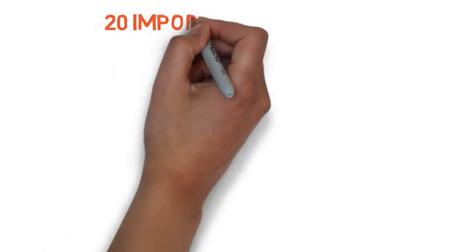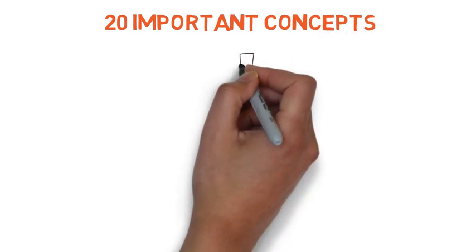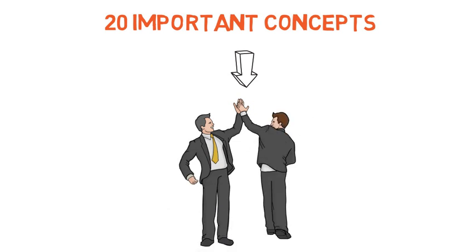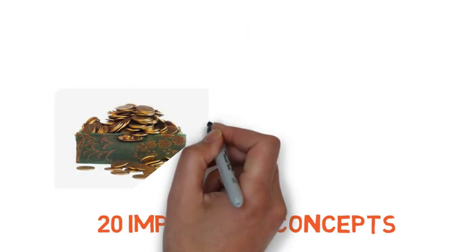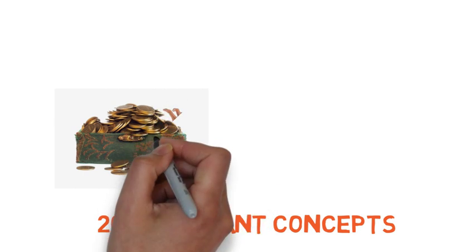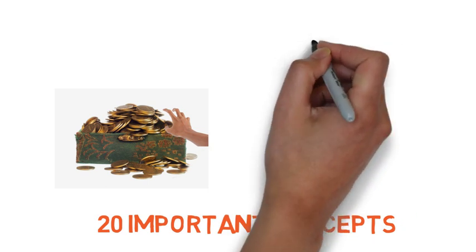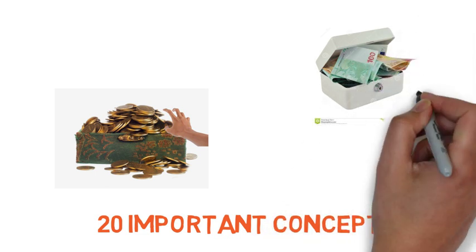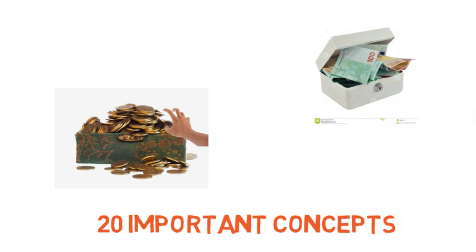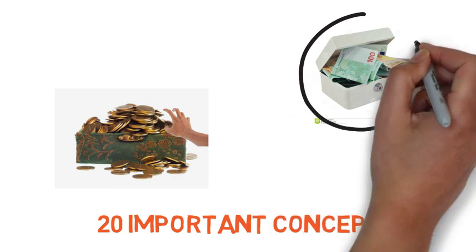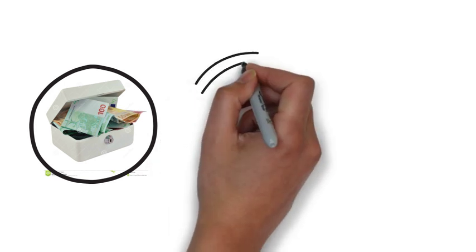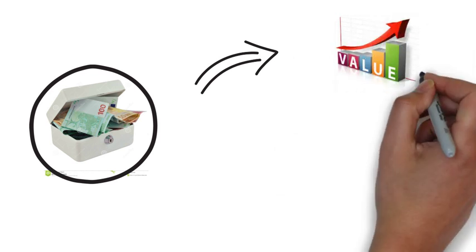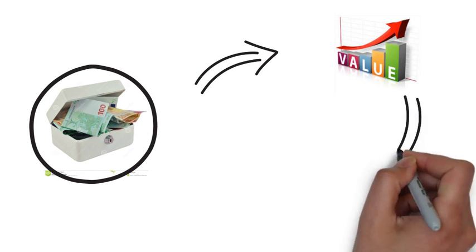So what we have done for you is shortlisted a few questions. If you know these 20 concepts, you can easily pass the subject. Think of it like two boxes — one with many coins and one with very few notes. You'd pick the notes box because even though there are fewer, their value is much higher. Similarly, these 20 points have high value and a higher probability of appearing in the exam, increasing your chances of scoring more.